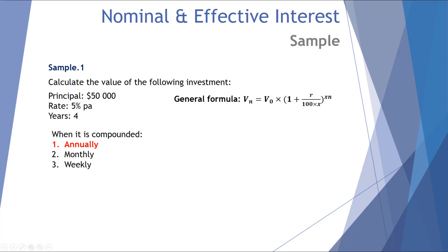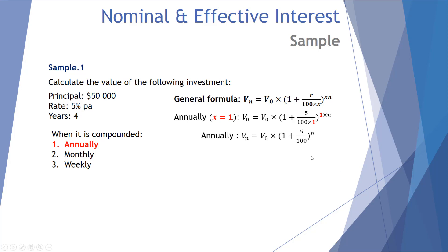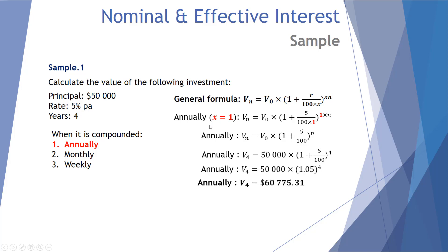The general formula is: Vn = V₀ × (1 + R/(100x))^(xn). Because annually has an x value of 1, this simplifies to (1 + 5/100)^n. Substituting our initial value of $50,000, interest rate of 5%, and n = 4 years, the investment compounding annually returns $60,775.31.